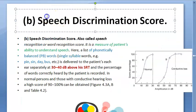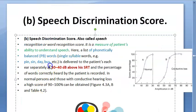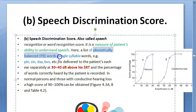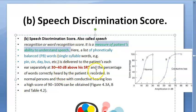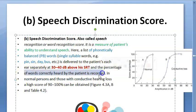In speech discrimination score, single-syllable words like pin, sin, day, and bus are given — these are phonetically balanced, or PB, words. The volume is louder here, and the test assesses whether the patient can understand speech. The percentage of words heard correctly is recorded.